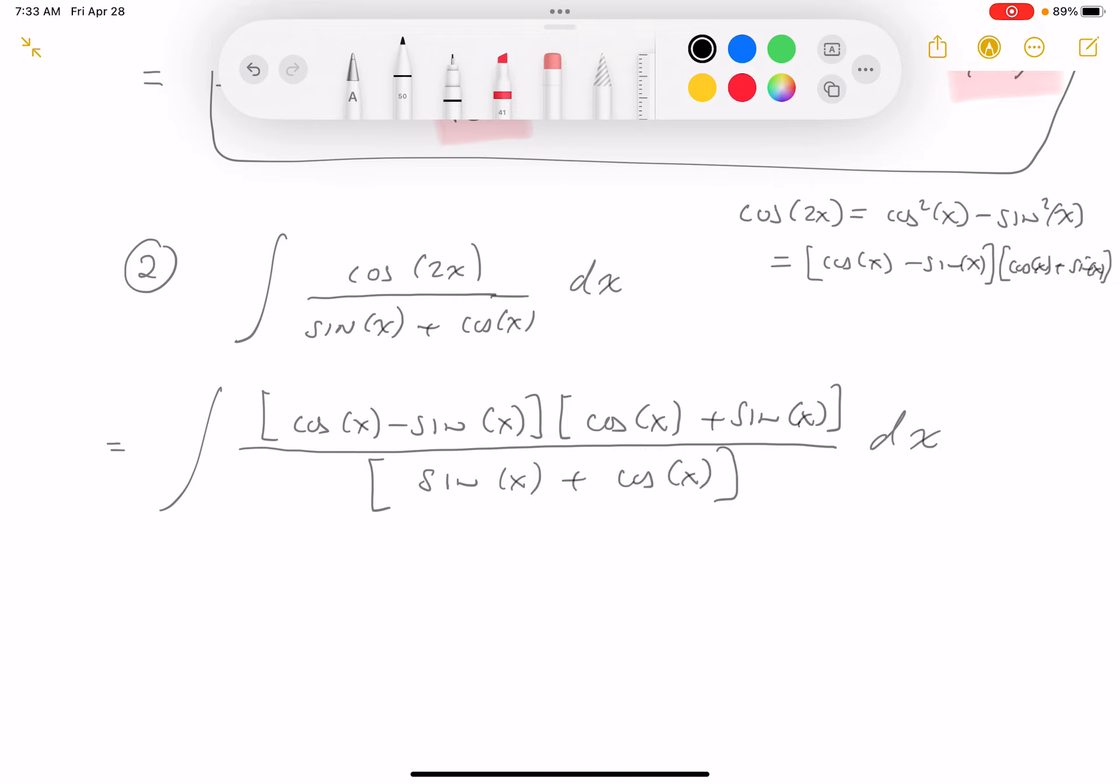Now additions are commutative, so this factor here and this factor here are identical. So what am I left off with? Something pretty simple. I'm left off with cosine of x minus the sine of x dx. I need to integrate.